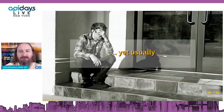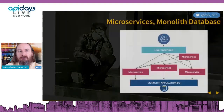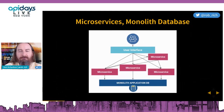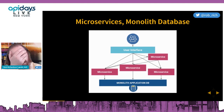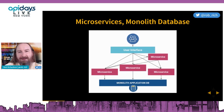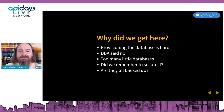But usually when we start talking about microservices and databases in particular, we end up with a problem: we've refactored our application into lots of microservices, but we still have one big monolithic database. I've been the person who architects this way — but why do we do that? Probably the most frequent reason we cite is because the DBA said no.